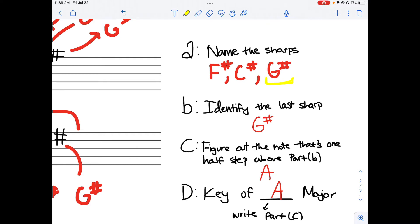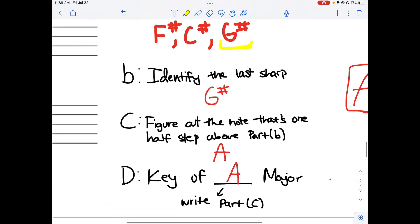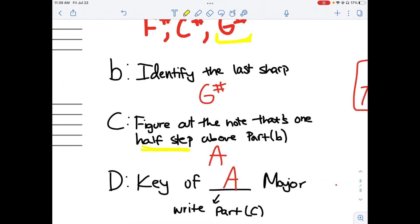a half step is basically the note that's right next to the note we have. So if we have a half step above from G sharp, that would be an A.